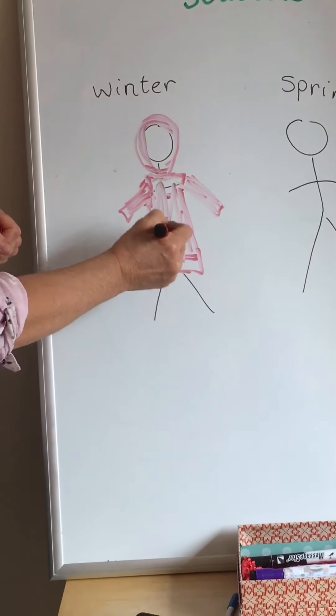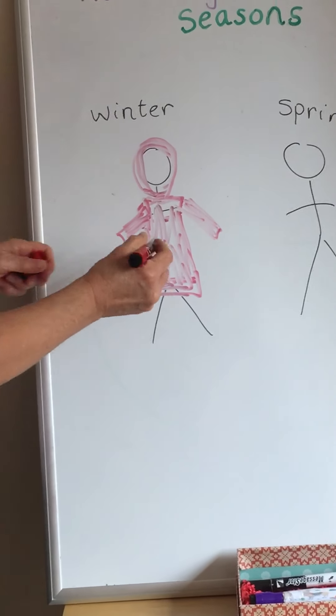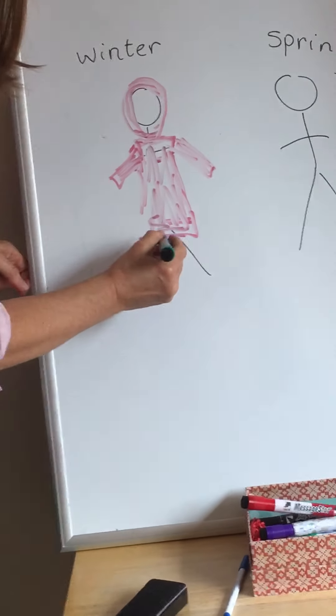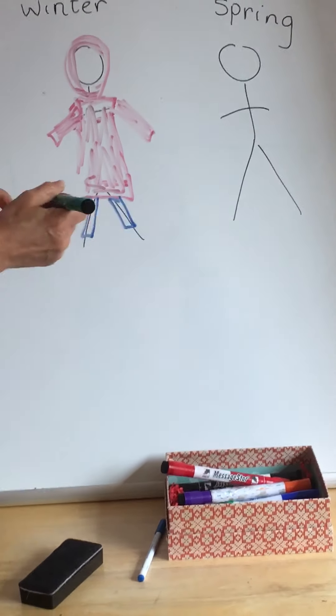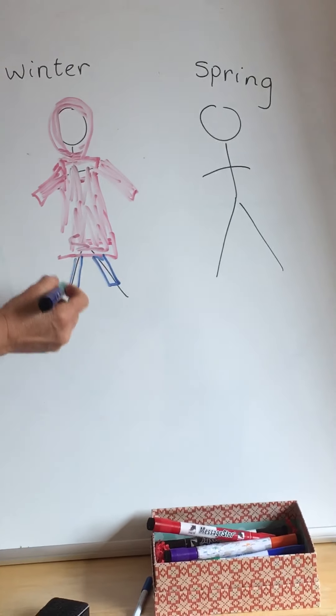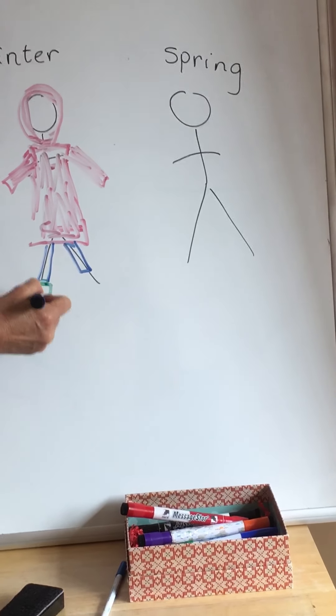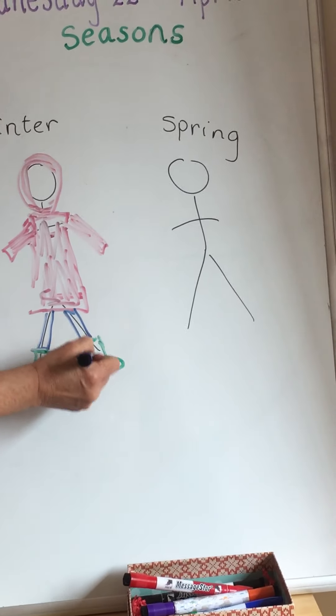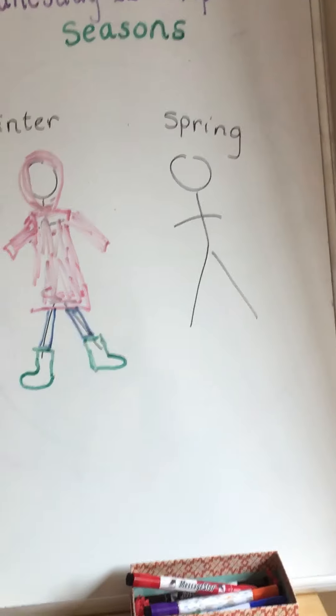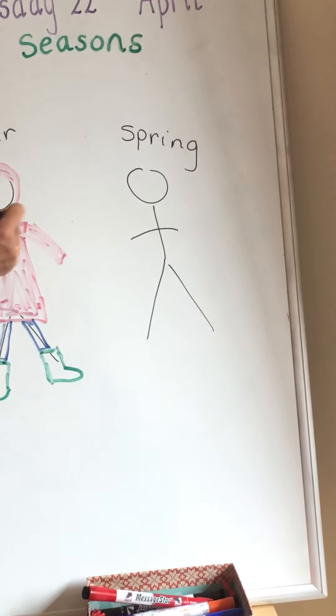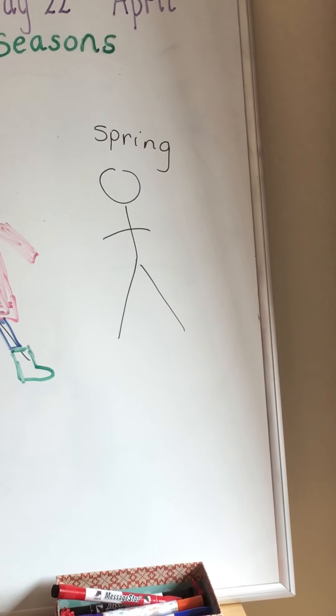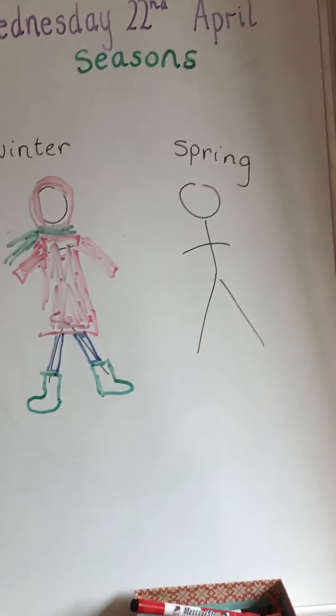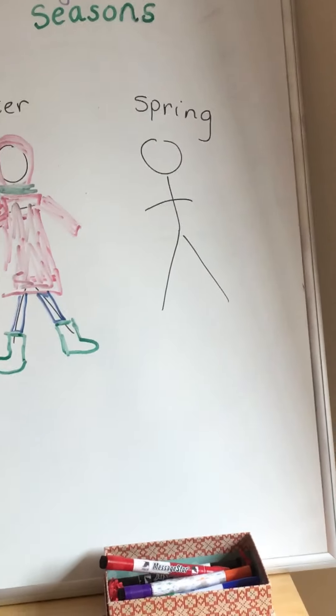Colour your coat in. Mine is a bit scribbly. I'm going to put trousers on my person. And I'm going to put some nice green welly boots. Nice walk in the woods with some welly boots on. Oh, I'm going to put a scarf on as well. Nice and warm for the winter. Hopefully your person will look something like that.